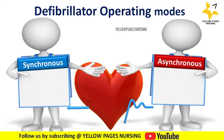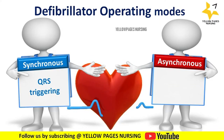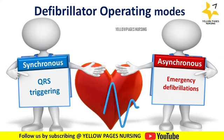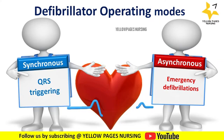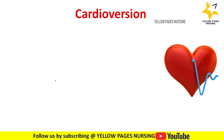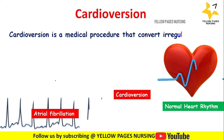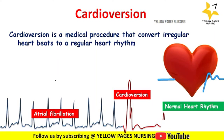There are two operating modes of a defibrillator: synchronous and asynchronous. In synchronous mode, the heart's own pulses are taken into account for QRS triggering. In asynchronous mode, it is reserved strictly for emergency defibrillation.